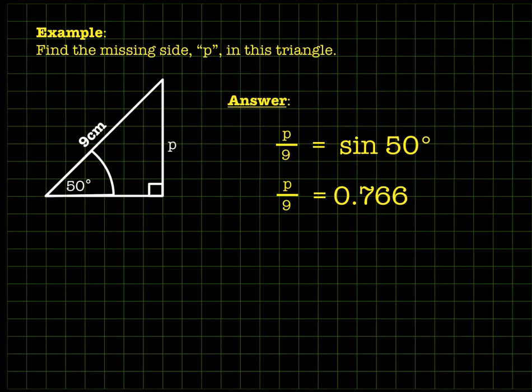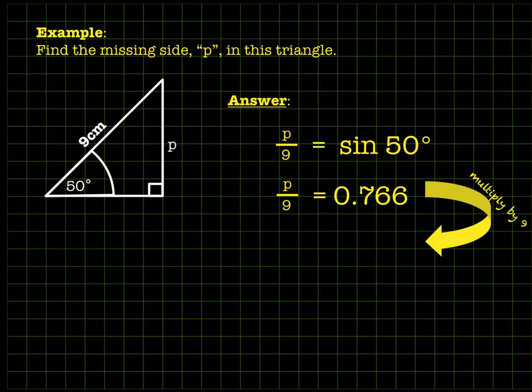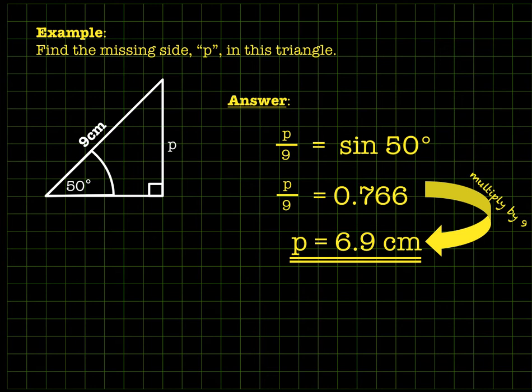For any 50 degree right-angled triangle, the opposite side divided by the longest side will give 0.766. So in this case, p divided by 9 is 0.766. We multiply both sides by 9 to get that p equals 6.9 centimeters.